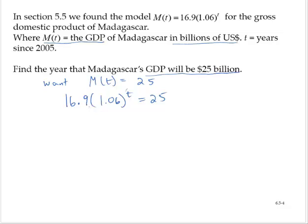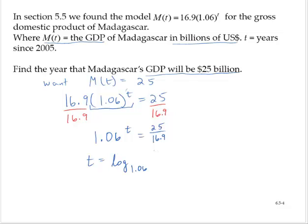I need to isolate the exponential factor — isolate 1.06 to the t. To do that, let's first divide by 16.9. That gives us 1.06 raised to the t is equal to 25 over 16.9. That's not a nice number, so I'm going to leave it as 25 over 16.9 without rounding. Now I will convert this to logarithmic form: t is equal to log base 1.06 of 25 over 16.9.